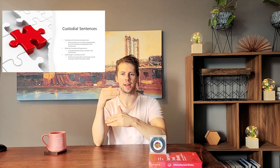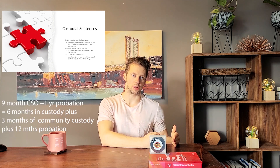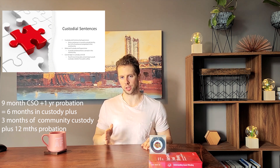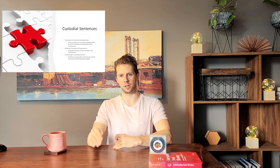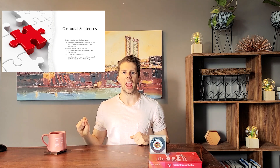Very often a probation order is attached to a DCSO or Custody and Community Supervision Order. For example, a young person might receive nine months in custody followed by one year of probation — spending six months incarcerated, three months serving the community portion of their custody sentence, and then beginning their probation. Probation also includes specific conditions; however, if they violate probation conditions they are not automatically returned to custody, unlike violations during the community release portion of their custody sentence.